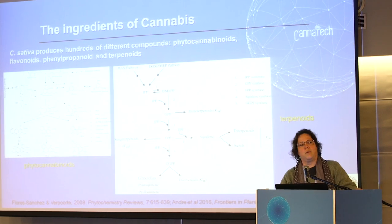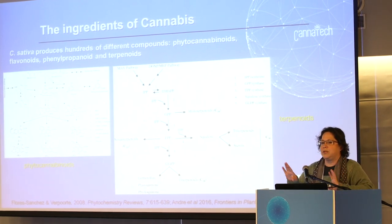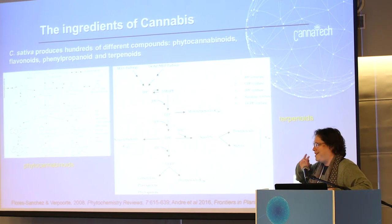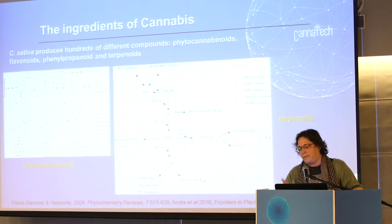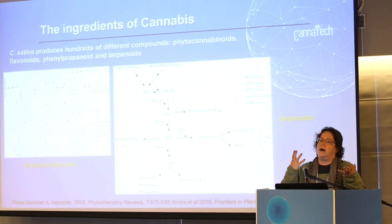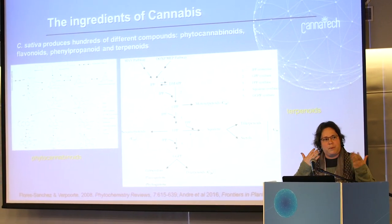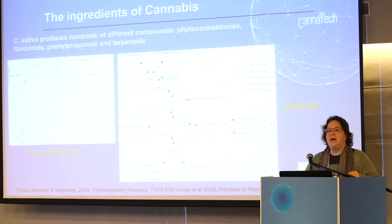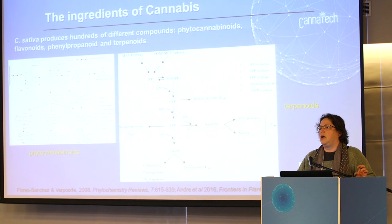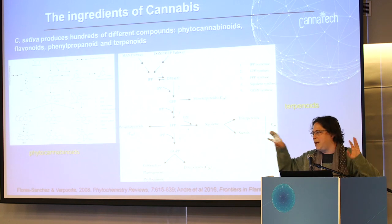Besides the phytocannabinoids, we have also terpenes. Terpenes are mostly known for their taste and smell, but they are also starting to be believed to have some kind of a therapeutic effect. It's very important to remember that those terpenes are not unique — there are no significant special terpenes in cannabis. Each one can be found in many different plants.